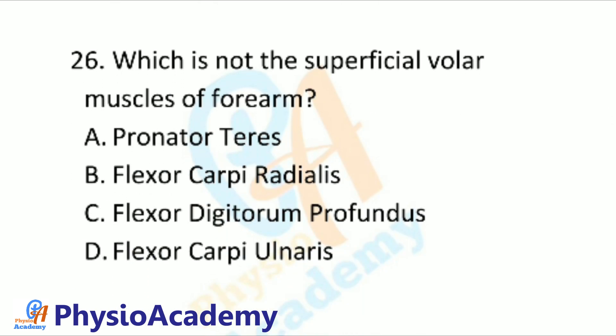Question number 26: Which is NOT a superficial volar muscle of the forearm? Option A: Pronator teres. Option B: Flexor carpi radialis. Option C: Flexor digitorum profundus. Option D: Flexor carpi ulnaris.